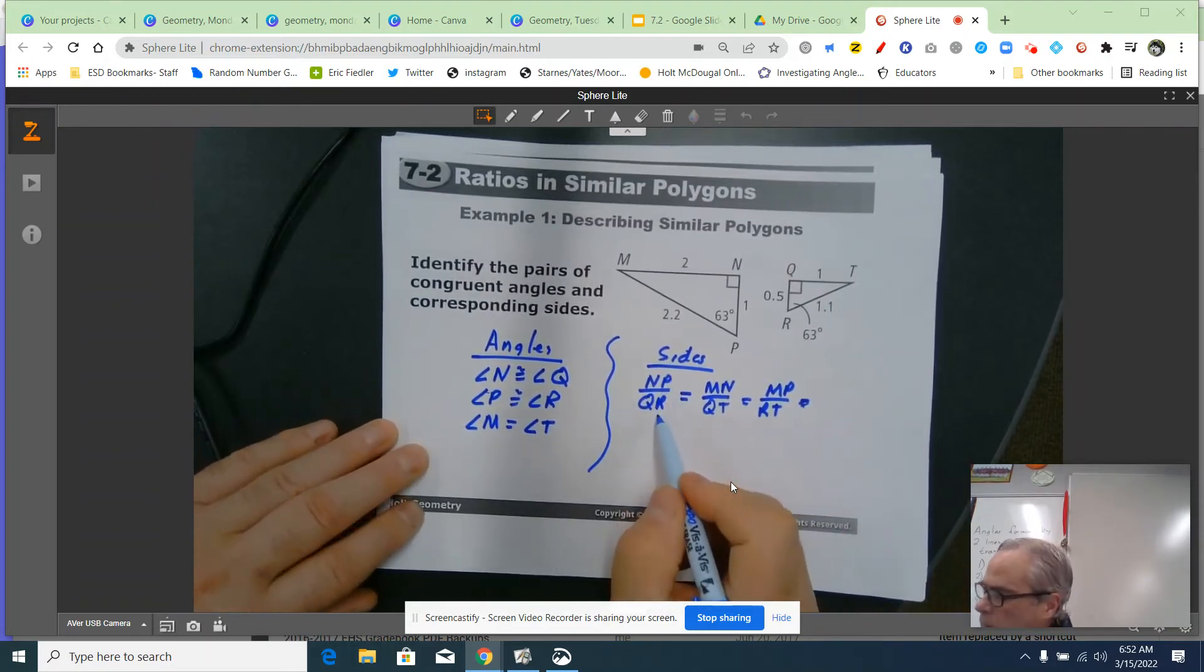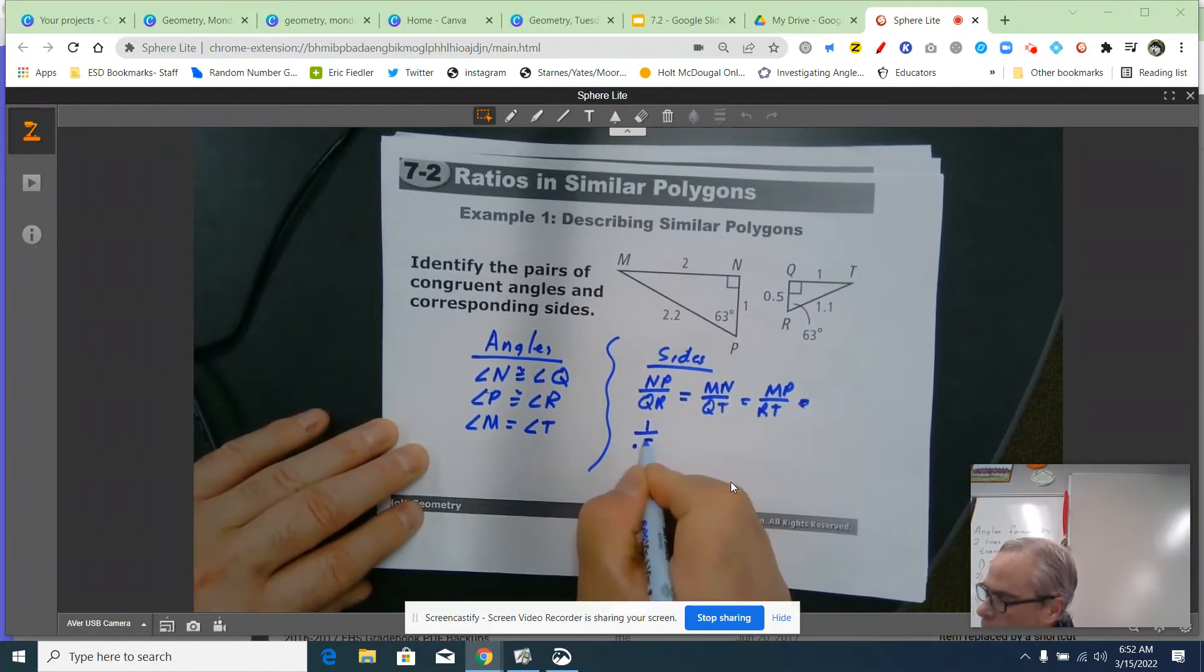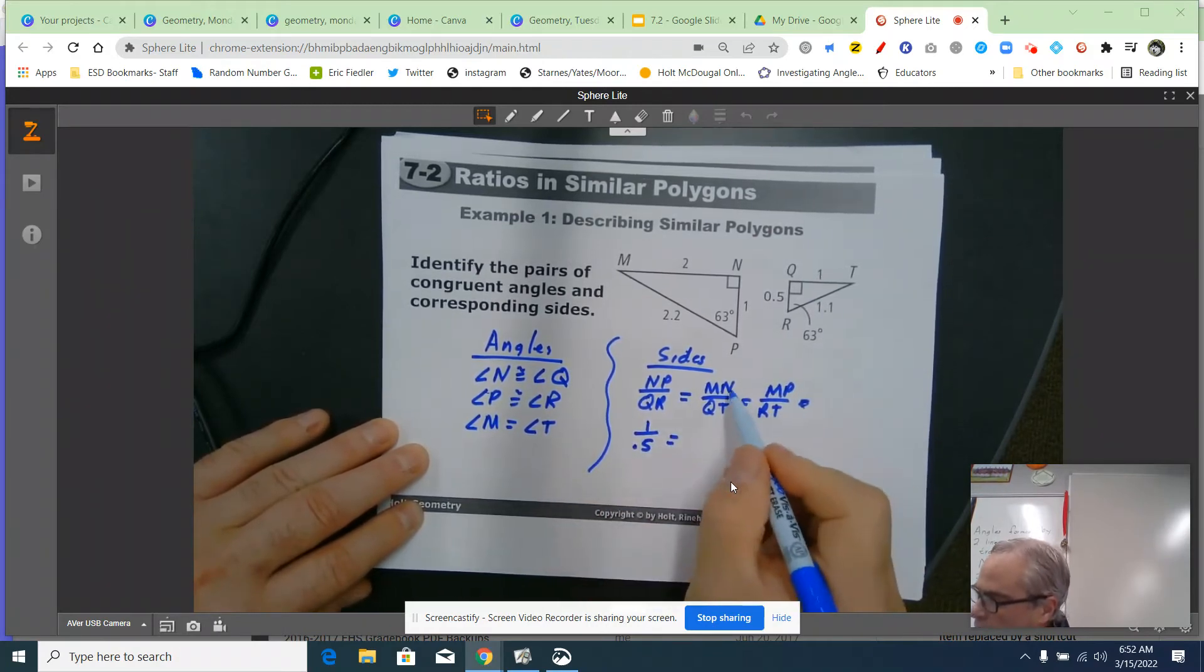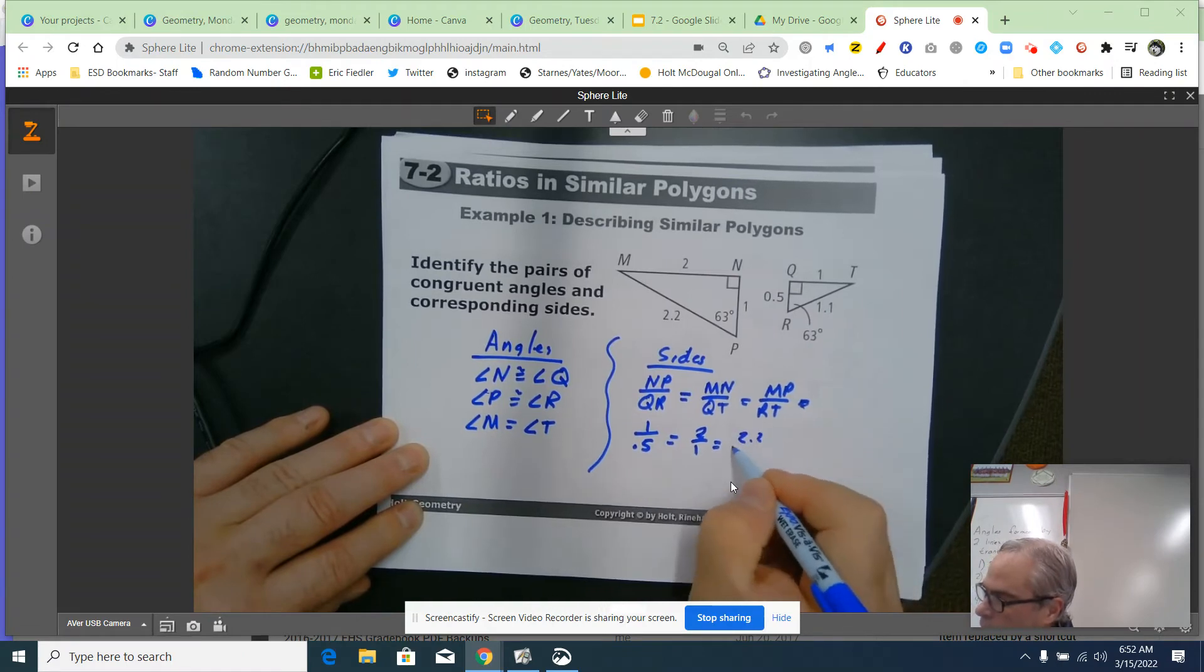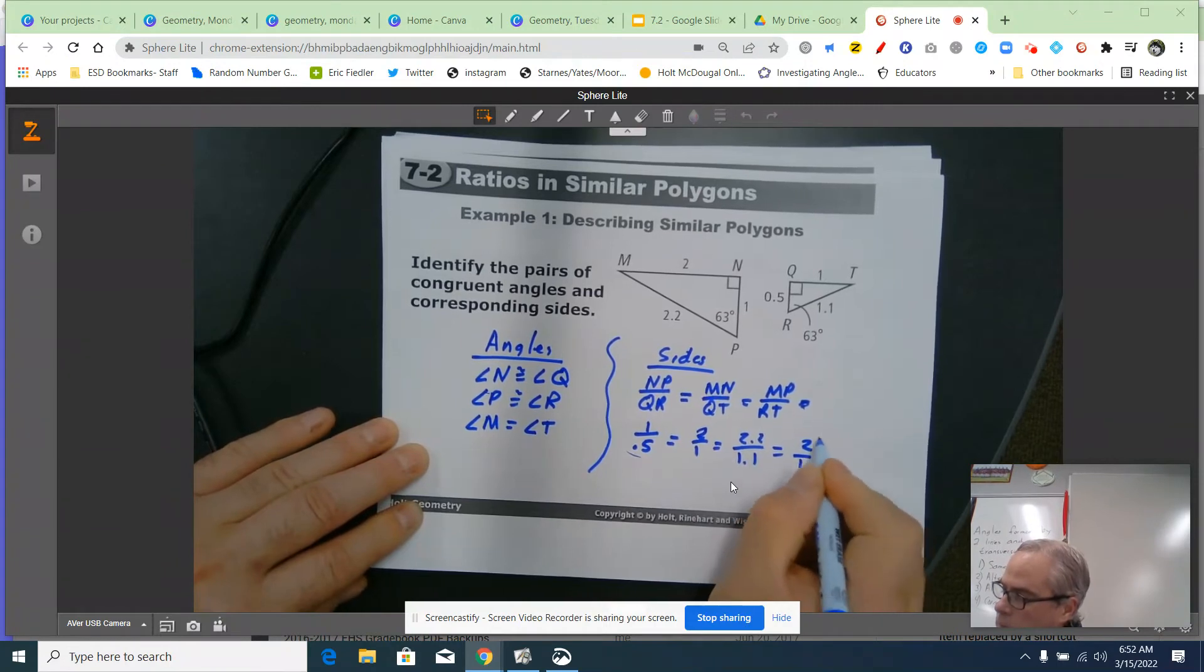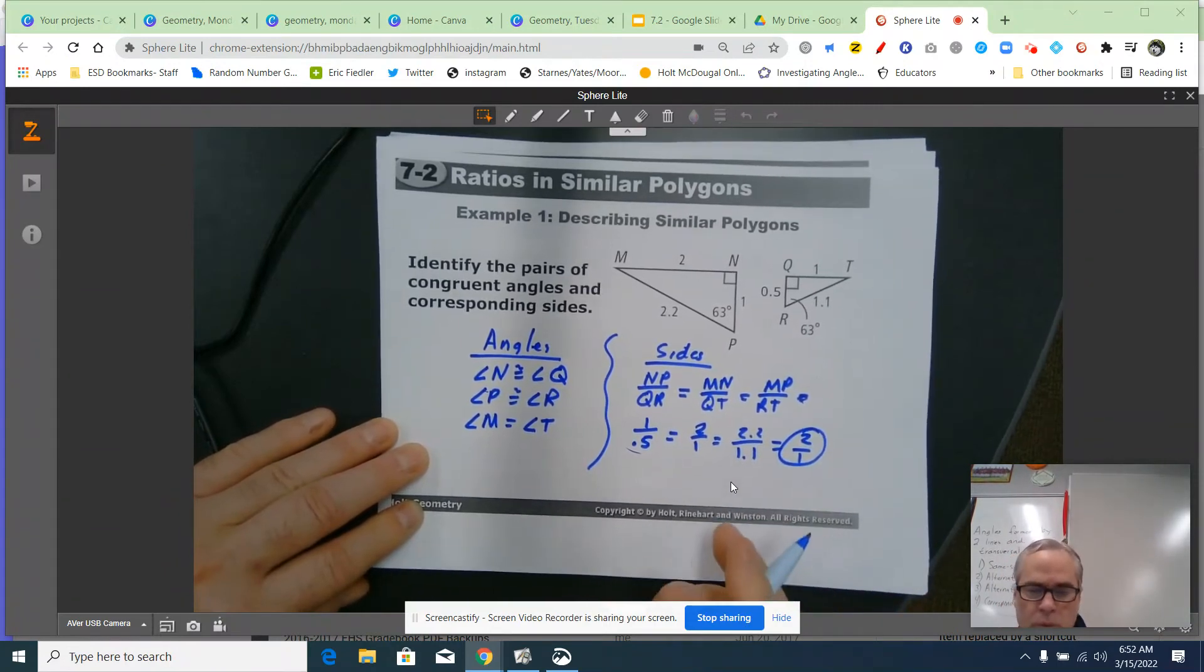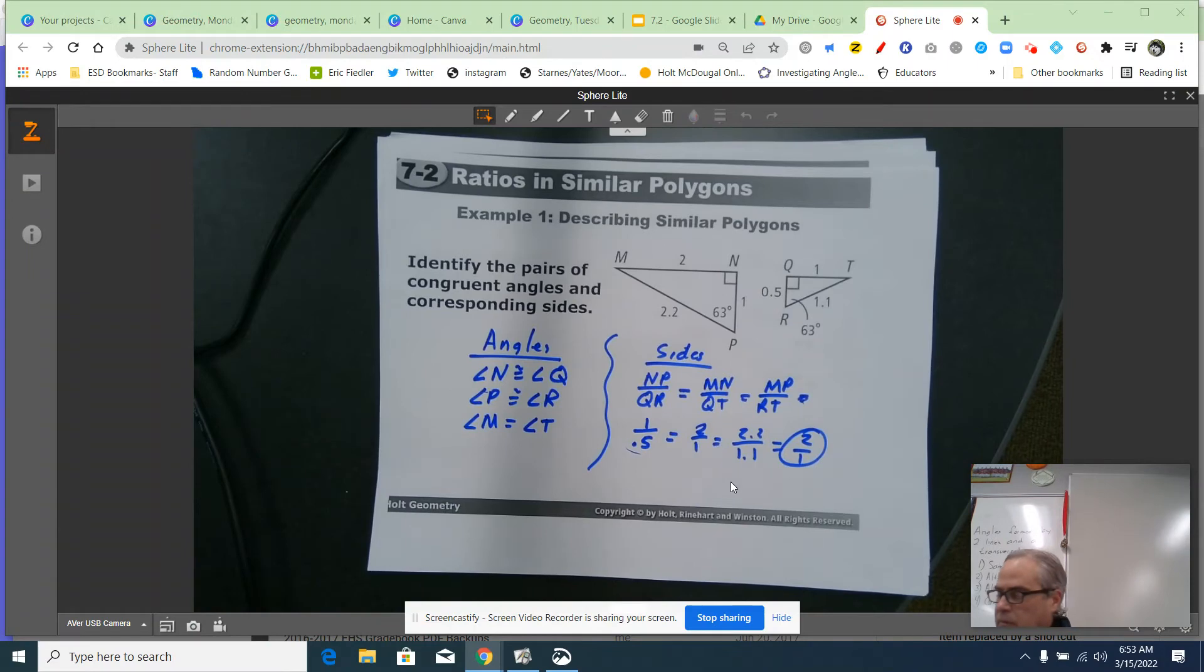I'll do it down below. NP over QR, 1 over 0.5. Is that equal to MN 2 over QT 2 over 1? And is that equal to 2.2 over 1.1? Well, they are all equal to 2 over 1, or 2. So, they are in the same proportion, and the angles are congruent. Therefore, these triangles have to be similar.